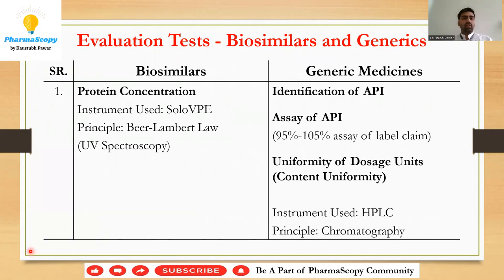The first and foremost evaluation test performed in biosimilars is protein concentration. As we know, biosimilars are made up of proteins, so the primary evaluation test to be performed is protein concentration. The most frequently used instrument is SOLO-BP, and it is based upon the principle of Beer-Lambert's law — basically UV spectroscopy.